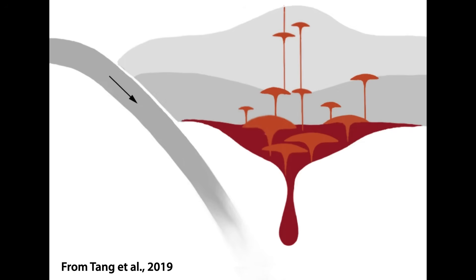In the late 1960s, Warren Hamilton hypothesized that because the only modern volcanic fields of comparable size to the great Mesozoic batholiths of the Western Americas are Andean-type volcanic fields, batholiths must exist beneath volcanic arcs. The idea took hold, and ever since, most geologists have assumed that Cordilleran batholiths were generated above subduction zones in high-standing regions of great crustal thickness, generated by voluminous arc magmatism. Our evaluation suggests that these ideas are largely incorrect.